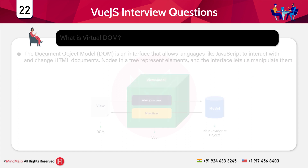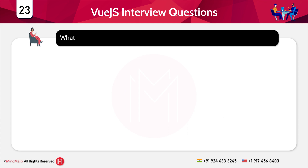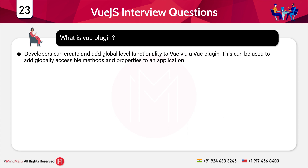The next question is: what is a Vue plugin? Developers can create and add global-level functionality to Vue via a Vue plugin. This can be used to add globally accessible methods and properties to an application, along with assets, options, mixins, and other custom APIs. VueFire, a Vue plugin that adds Firebase-specific methods and bindings to the entire application, is an example of a Vue plugin.